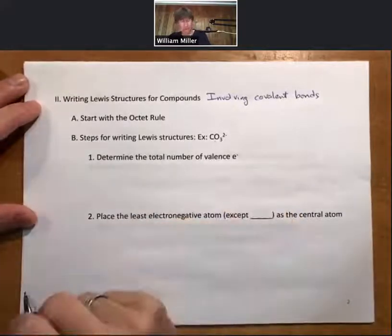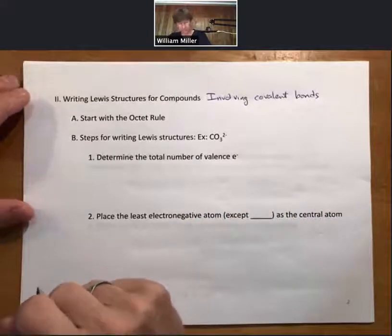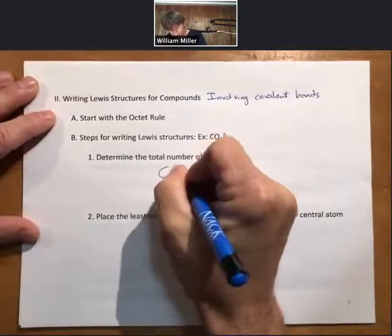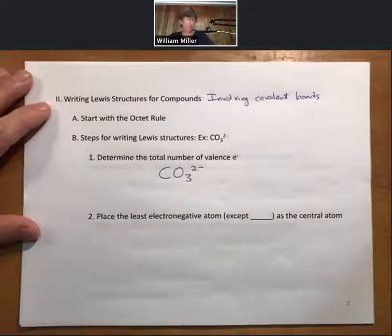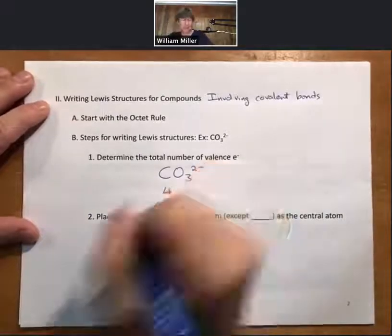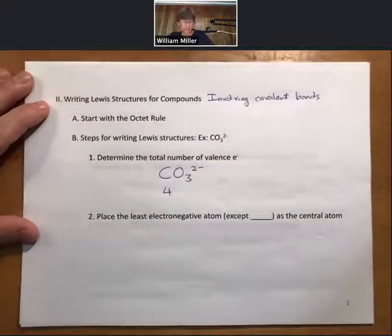I'm going to do that for the example for the carbonate ion. That's what we're going to be doing the Lewis structure for. We've got carbonate ion. If we looked at our periodic table, we would see that each carbon atom has four valence electrons.